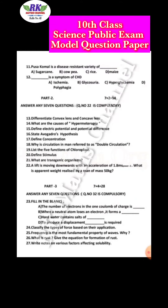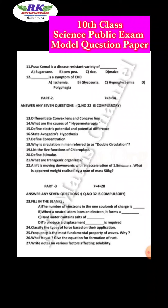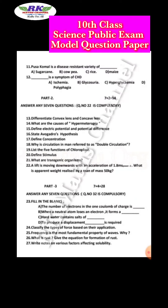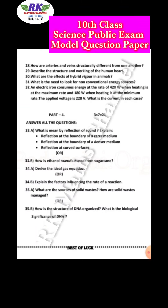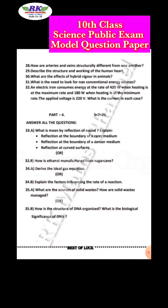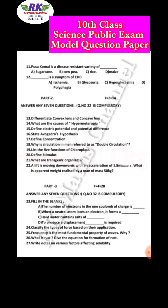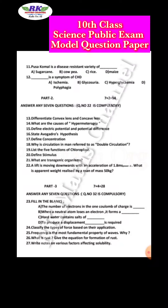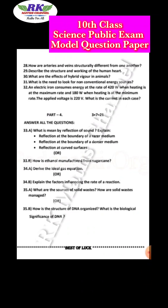Part 3: answer any 7 questions from question number 23 onwards, up to 32. Each question carries 4 marks, so 7 fours are 28 marks. Question number 32 is the compulsory question. You can see the page 2 screenshot and download the PDF link from the description.